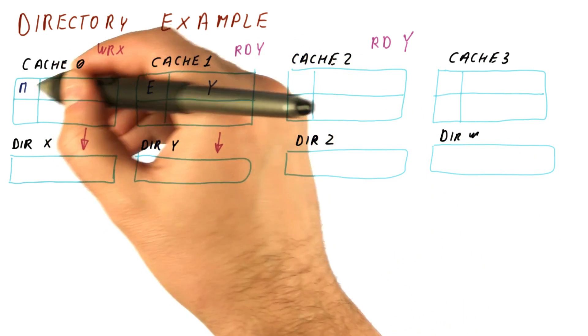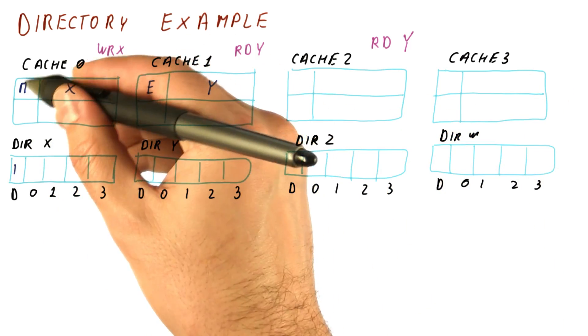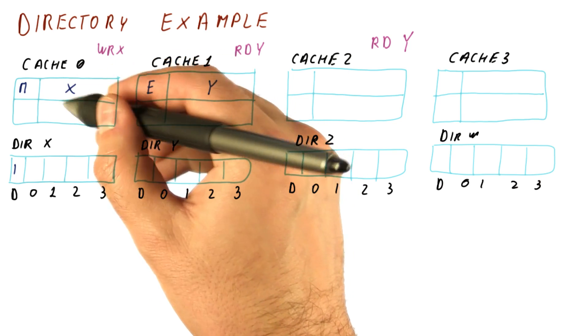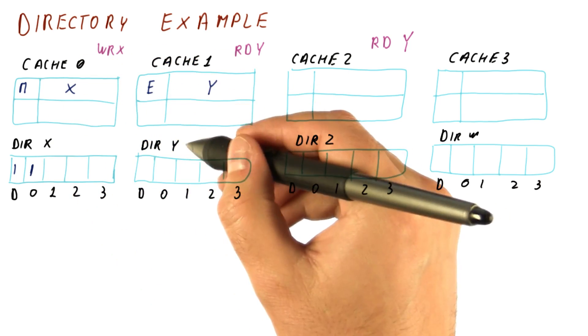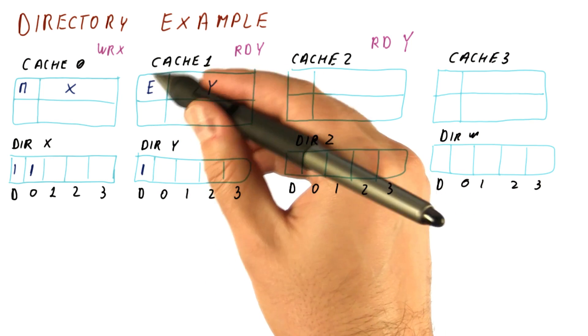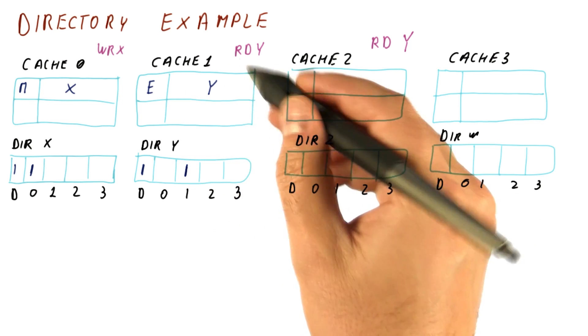And here, of course, the block will be modified anyway. So here we will set the dirty bit and note that block x is now in cache zero. And here we will set the dirty bit because exclusive can become dirty easily, and set the presence bit for cache one.